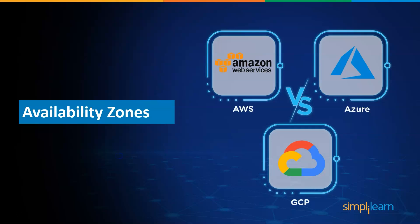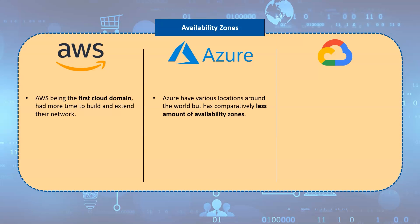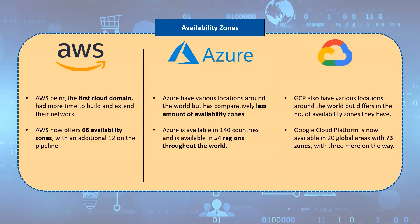Let's have a look at the availability zones of these platforms. Because AWS was the first in the cloud domain, they have had more time to build and extend their network, but Azure and GCP both have various locations around the world. AWS now offers 66 availability zones with an additional 12 in the pipeline. Azure is available in 140 countries and 54 regions throughout the world, while Google Cloud Platform is available in 20 global areas with three more on the way.